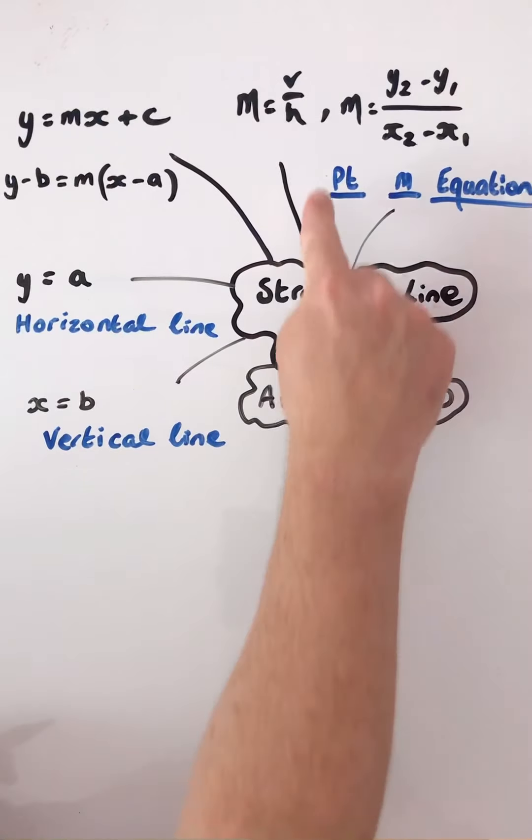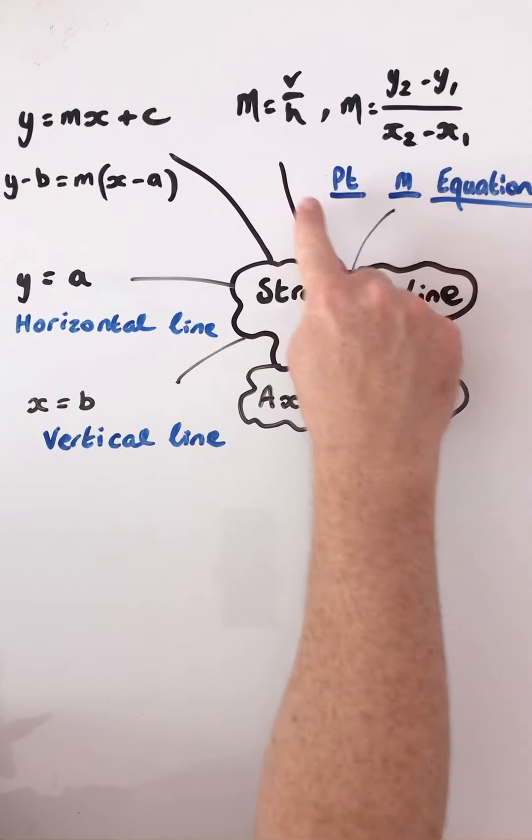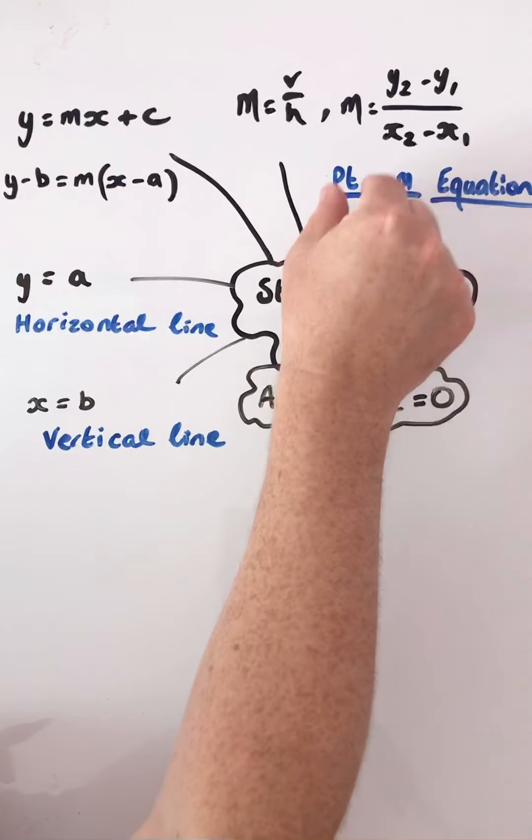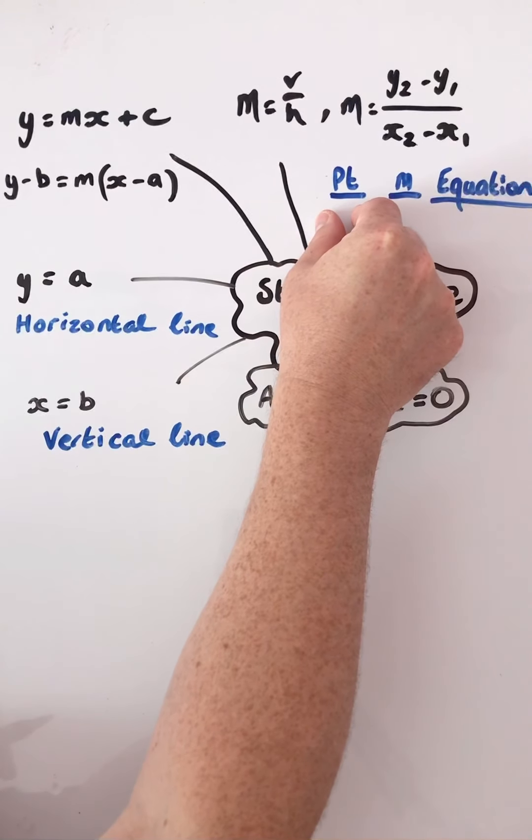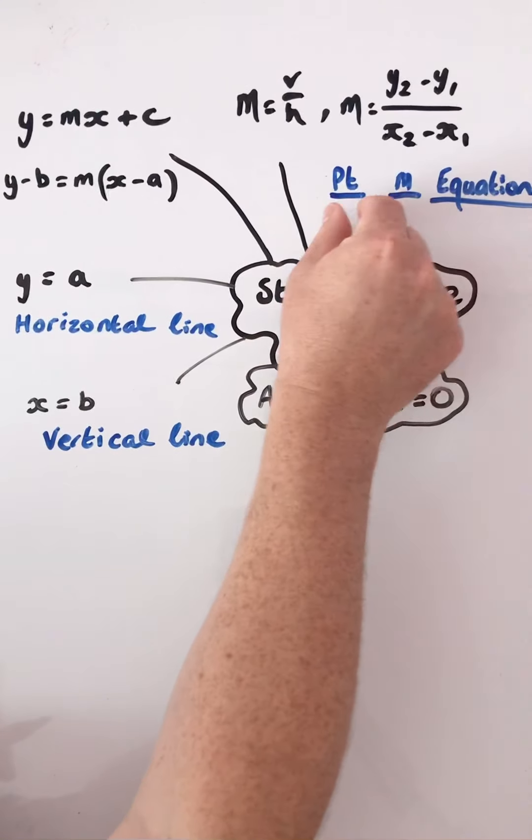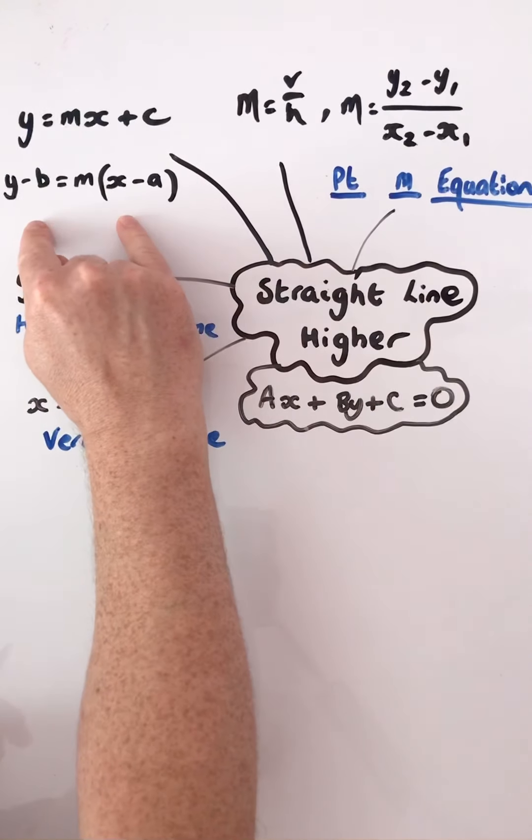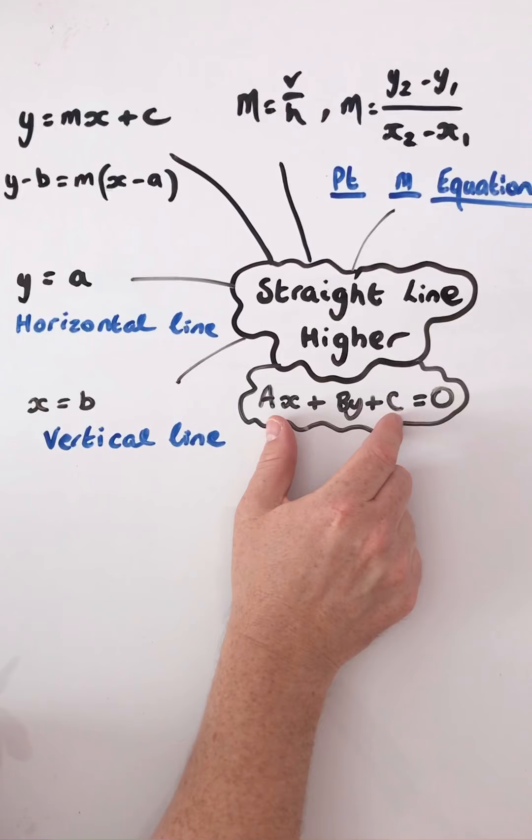Your structure for this here: what information do you have, do you have points, do you have the gradient, do you need the points to work out the gradient, and your equation. Using this, and then writing it in this form.